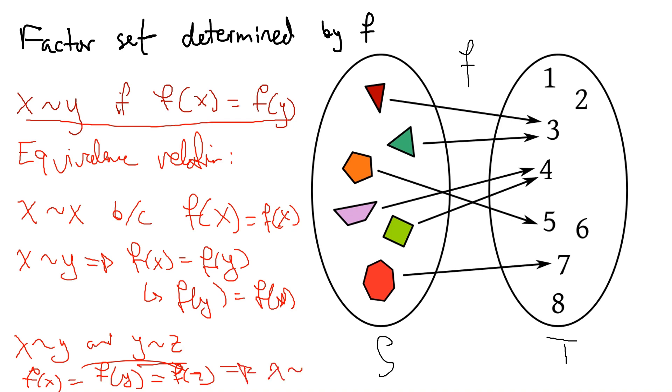We get that x is equivalent to z. Long story short, this is a nice way, this definition of two elements being the same if they have the same output, is a nice way of saying that two elements are equivalent.